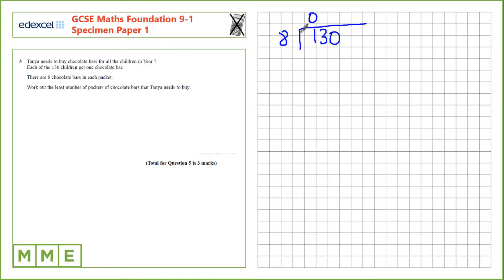8 into 1 doesn't go, but 8 into 13 is 1 with a remainder of 5. 8s go into 50 six times with a remainder of 2. 8s into 20 go twice and then we'll have other remainders but this is enough for us to find an answer here.